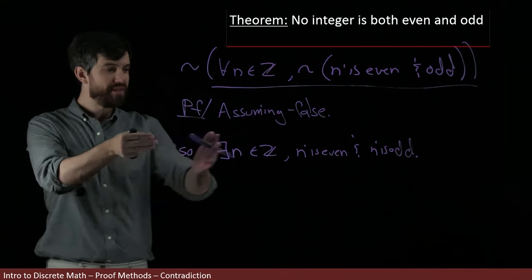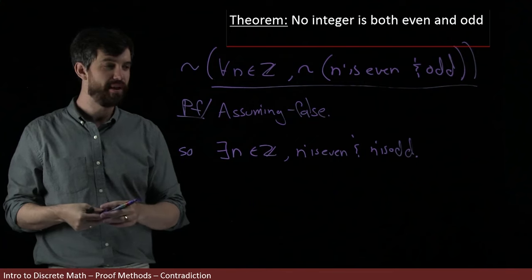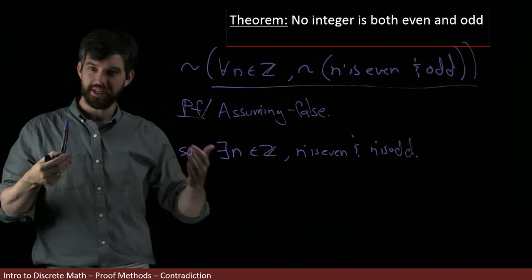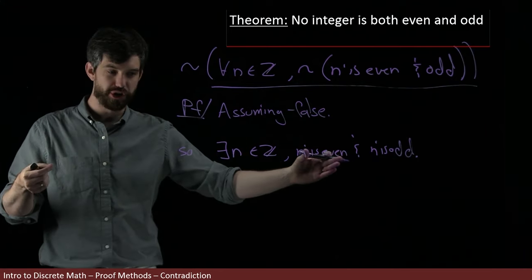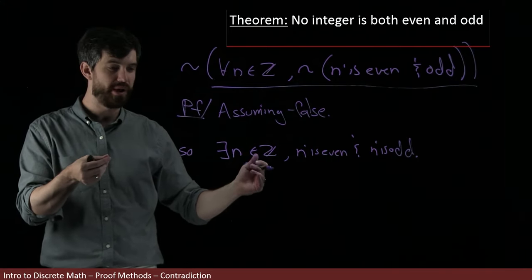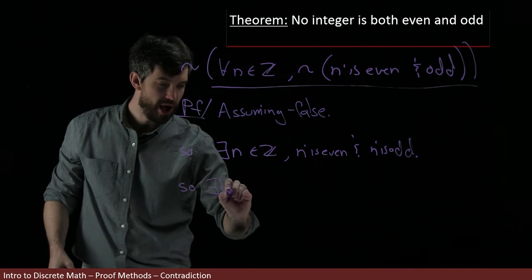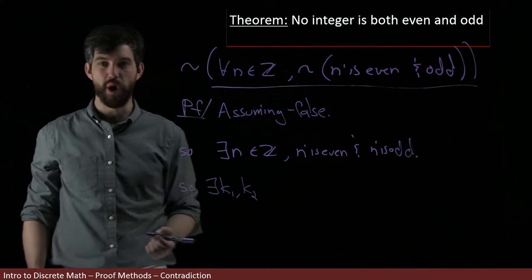Okay, so I've got this assumption. And what's the next step in most of our proofs? Let's apply the definition. I'm claiming this is even and I'm claiming this is odd. But what does that mean? Well, it means that there exists two other integers so that I can write it in the following way. So there exists a property. I'll call them k1 and k2 because I need one for the even and one for the odd. These are both going to be integers.